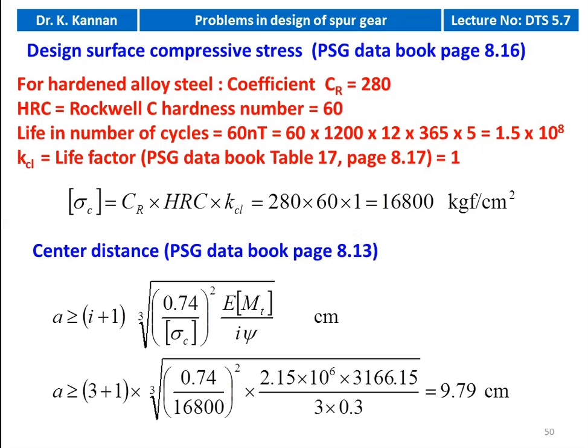Then we calculate the center distance — the equation is available on page number 8.13. A is greater than or equal to (i+1) into the cubic root of 0.74 divided by sigma_c squared, into E into design torque, divided by i into psi. Substituting: (3+1) into cubic root of 0.74 divided by 16800² into 2.15×10^6 into 3165.15 divided by 3 into 0.3, which gives 9.79 centimeter.